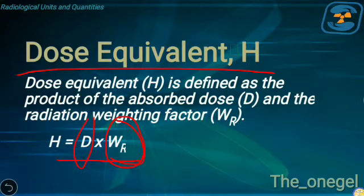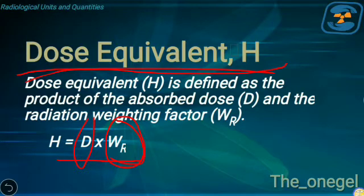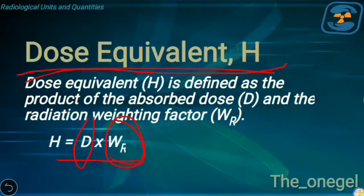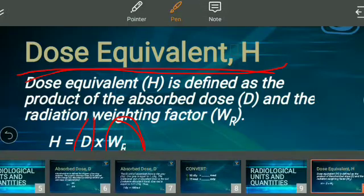In radiation protection, dose equivalent can also be used for patients, but for now the key concept is that dose equivalent is the dose received by radiation workers. Do not forget: absorbed dose refers to the patient, and dose equivalent refers to the radiologic technologist or radiation worker in general.